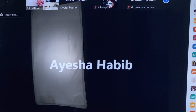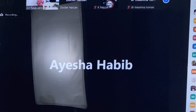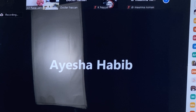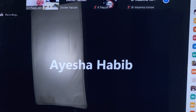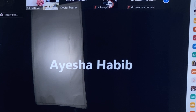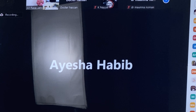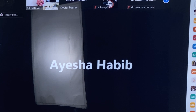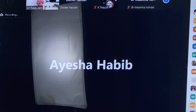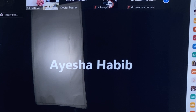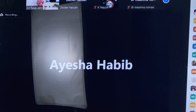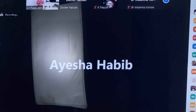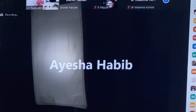Another variable is the angulation of the seventh with reference to the sixth. The seventh should be mesially inclined at 15 to 30 degrees over the first permanent molar. This is the ideal scenario for spontaneous closure of the extraction space of the first permanent molar.